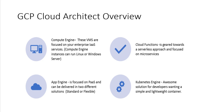We have App Engine — this is a platform as a service, delivered in two different solutions called environments: Standard or Flexible. Cloud Functions is your serverless microservices managed service, also known as function as a service. For example, if you want to set up triggers or webhooks, this is a good service to consider.